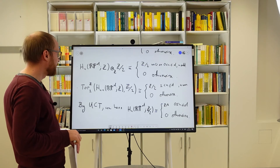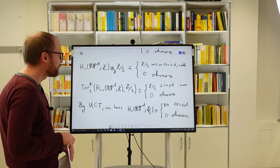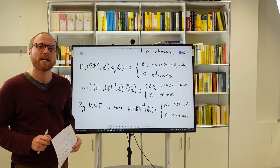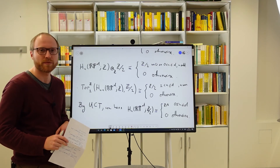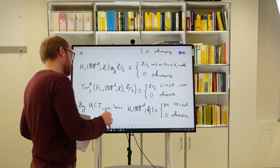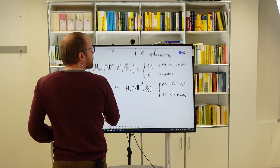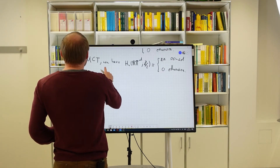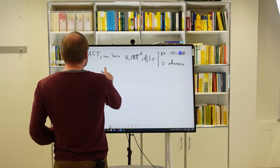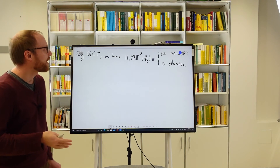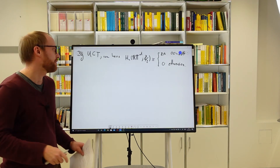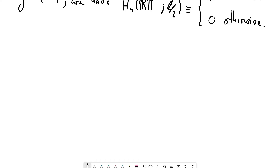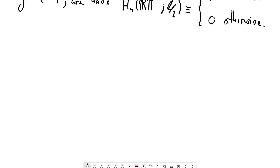That concludes the application of the universal coefficient theorem. Let's now consider an application of the second big theorem we just proved, namely the Künneth formula. To give an example computation, let me first derive a general result which follows from the Künneth formula, and then use it for a concrete calculation.